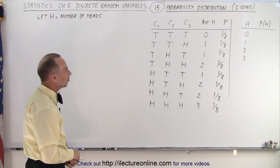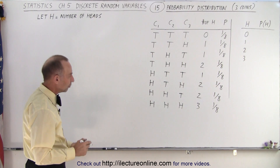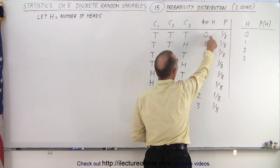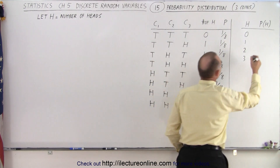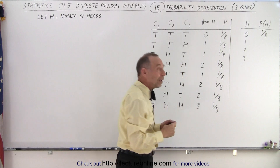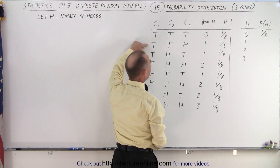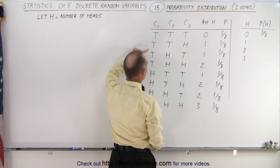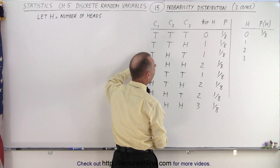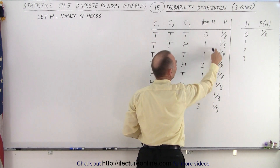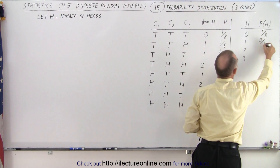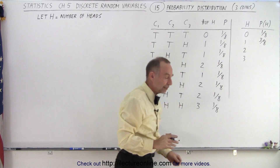Those are all the various combinations we can have. Notice there's only one out of eight where we have all tails — zero heads — so the total probability of zero heads is one out of eight. When it comes to one head, we have one head here, one head there, and one head there — three possibilities of different combinations that all give us one head. Each has a probability of one-eighth, so when we add them together, that means three-eighths probability that we end up with one head.